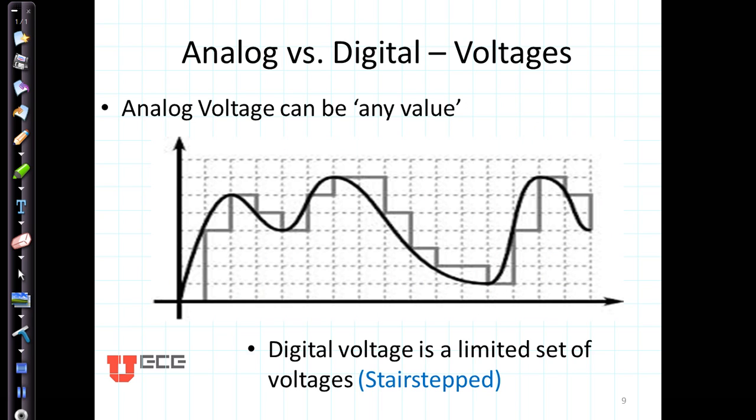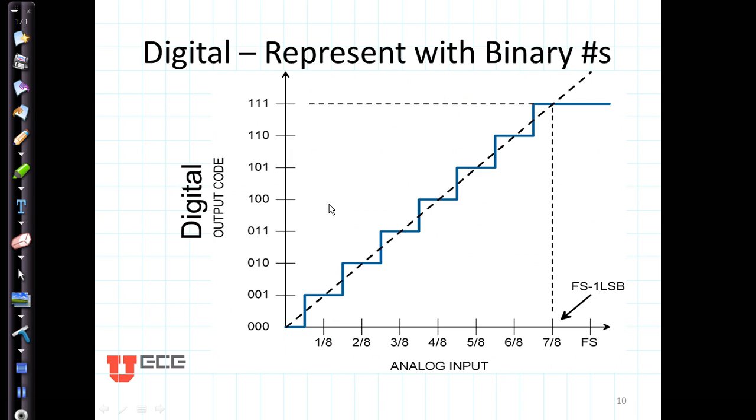An analog voltage can have any value, such as this swirl that's shown here. A digital voltage has a limited set of values, a limited set of steps, such as the stair-step voltage shown here. Digital voltages are represented with binary numbers. The analog voltage, this dashed line, you can see is a continuous solid line. If we wanted to say that full scale is eight, and we wanted to divide that into eight individual sets, that would be one way that we could represent digital values. So our value is either less than one-eighth, it's zero, or it's one-eighth, two-eighths, three-eighths, four-eighths, and so on.